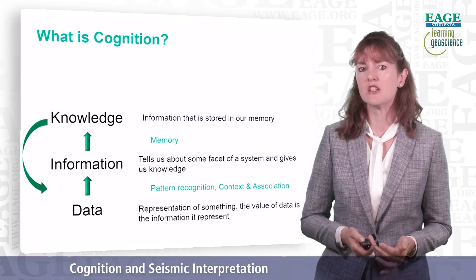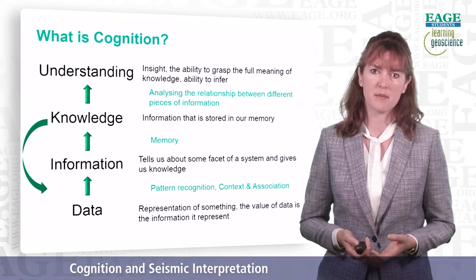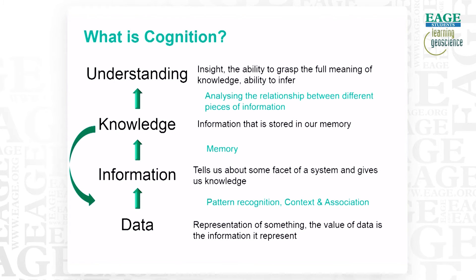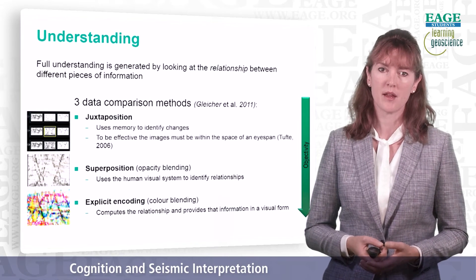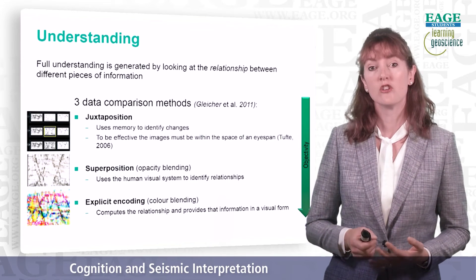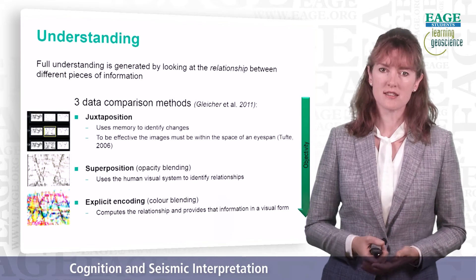To transfer knowledge into understanding takes another step. For this, we need to analyse the relationship between different pieces of information and pull different bits together to really get a full understanding of something. To understand these relationships, we can use three main comparison methods that are intuitive to our brain — methods the brain is particularly effective at using. These three methods are juxtaposition, superposition, and explicit encoding.